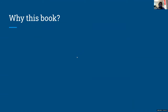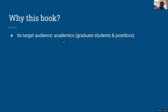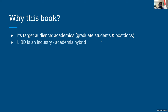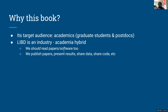The target audience when Jeff wrote it was academics: graduate students, postdocs, and PIs. Most of you are not graduate students or postdocs right now, but people watching this video in the future might be. Overall, where we work — the Institute for Brain Development — is an industry-academia hybrid. So we should actually be reading papers and software. As a team, we're definitely involved in publishing papers, presenting results, sharing data, sharing code, and many of the other chapter topics we just saw.